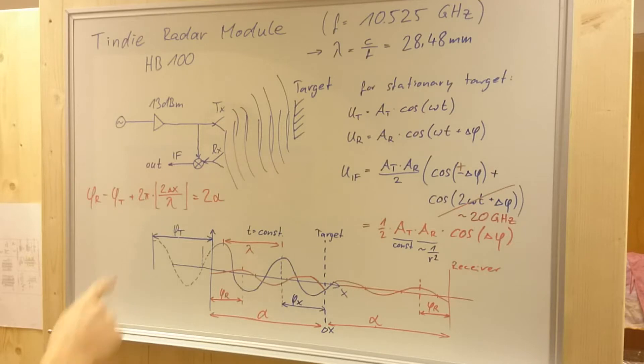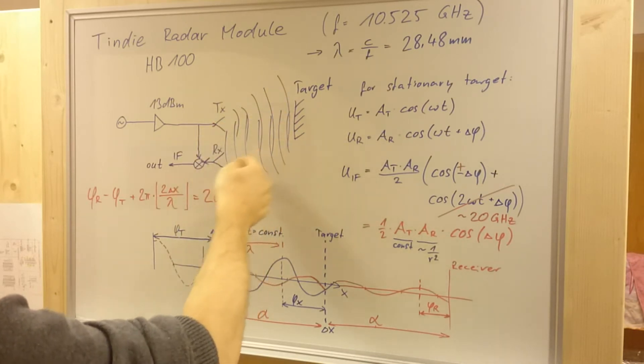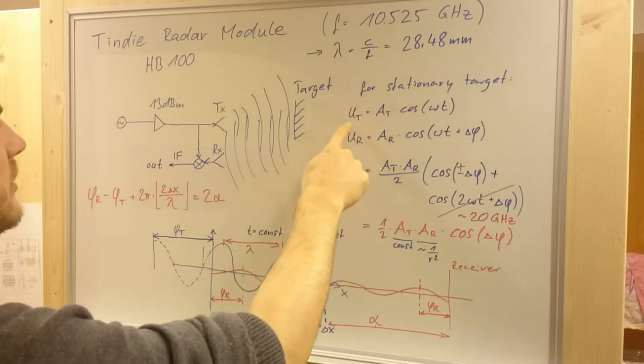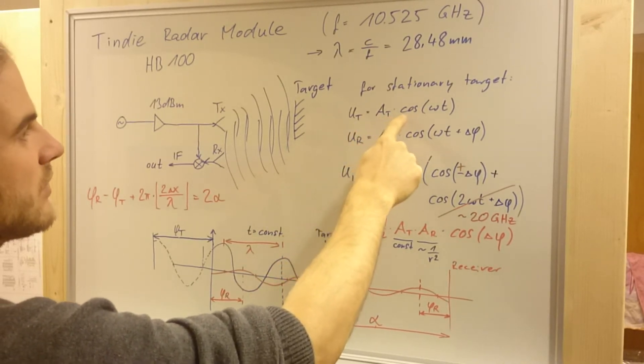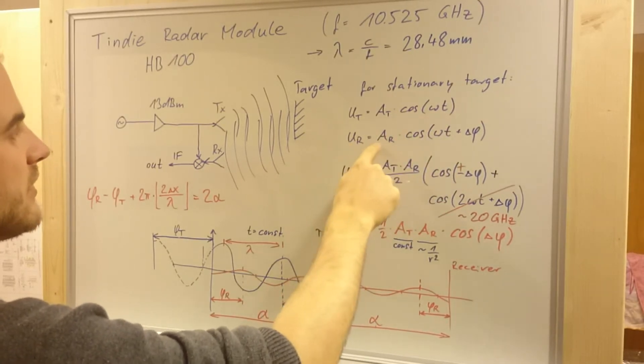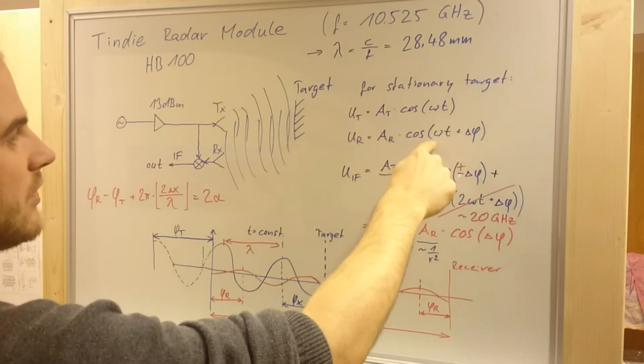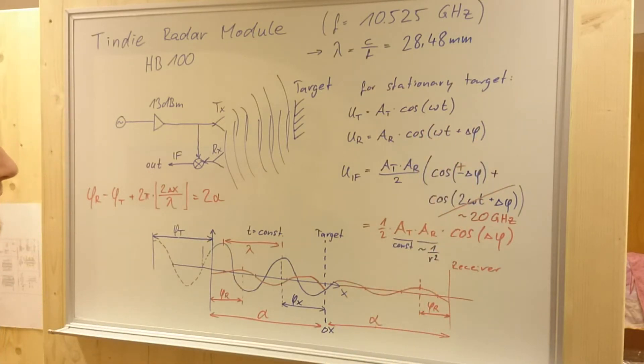Let's calculate what the output gets for a stationary target. The transmitted waveform is reflected at the target and the receiving antenna receives the reflected signal. For the transmitted signal, we have the transmission amplitude times cosinus omega t. And the received signal is the receiving amplitude times cosinus from omega t plus delta phi. Delta phi is the difference in phase of the transmitted and received waveform.